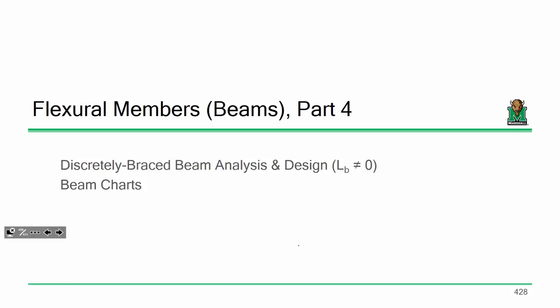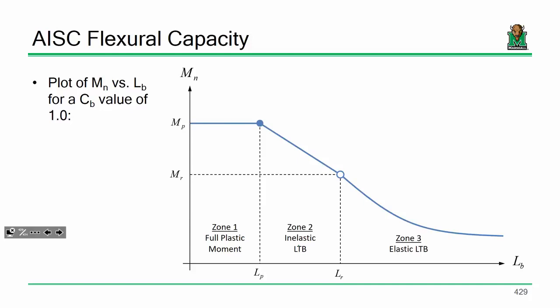For when we discuss discretely braced beams, M_P not only serves as the capacity at an unbraced length of zero, but it also serves as the maximum capacity. Regardless of the buckling capacity or how C sub B can serve to amplify your capacity, M_P is always taken as the max.